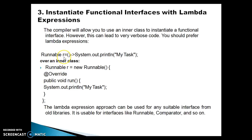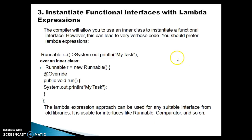For example, suppose you want to create a thread. We know that Runnable is a functional interface, so we can make use of a lambda expression. If you want to define a lambda expression for the Runnable interface, that is the preferred way, as opposed to defining an anonymous inner class. The lambda expression approach can be used for any suitable interface from old libraries — it is usable for interfaces like Runnable, Comparator, and many others that have only one abstract method.